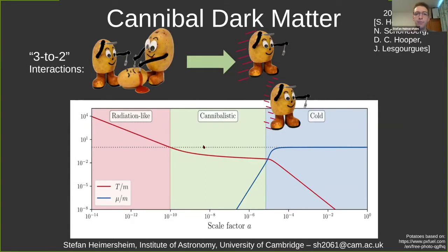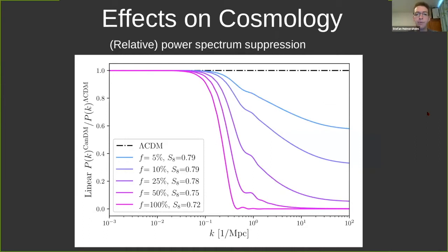This continues until the interaction freezes out, when the interaction rate is low enough, and then we have cold dark matter because we don't have these interactions anymore. We implemented this model into the Boltzmann solver CLASS and looked at effects on the cosmic microwave background and the matter power spectrum. What I want to show you is the matter spectrum. I've plotted the cannibals matter spectrum divided by the spectrum you would get for Lambda CDM. On large scales on the left, the ratio is one with no change. But on small scales on the right, you get suppression.